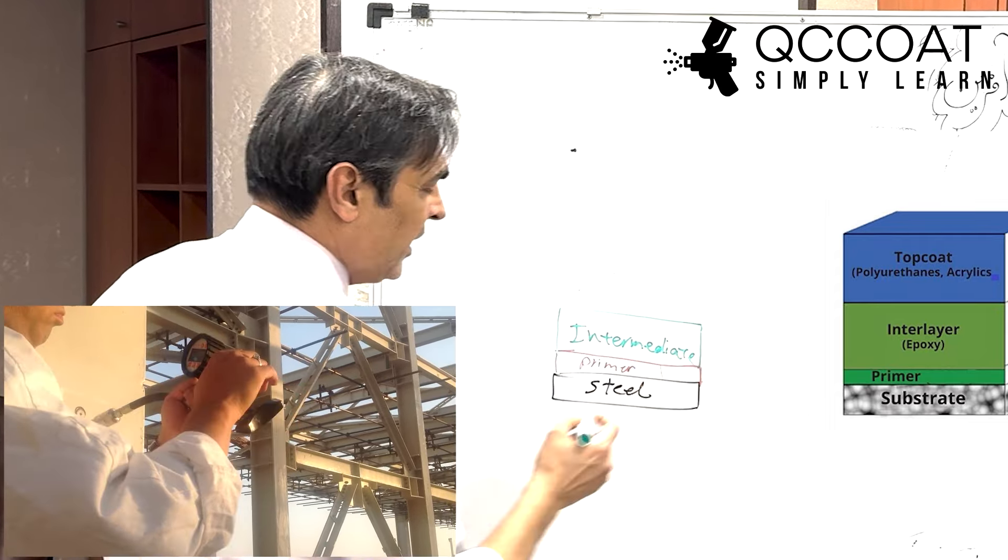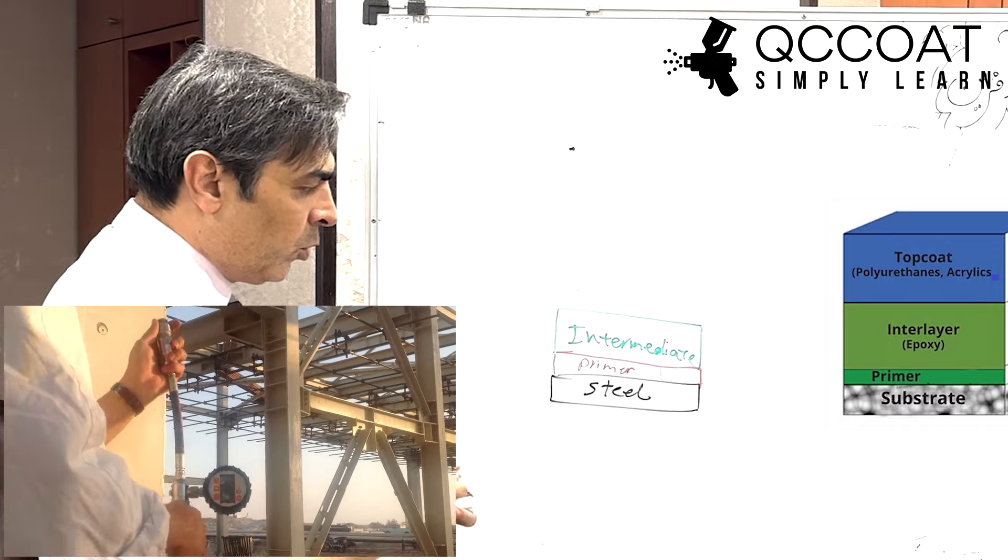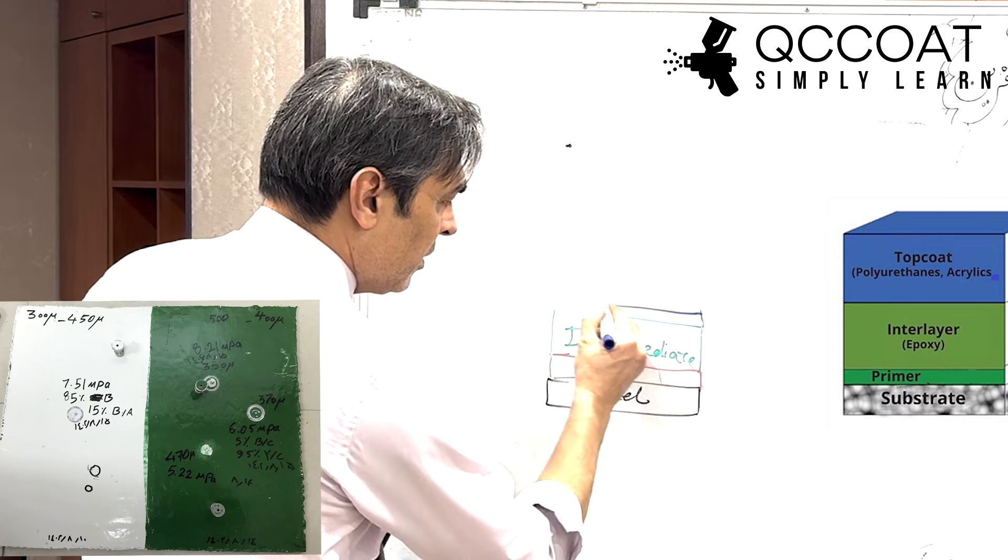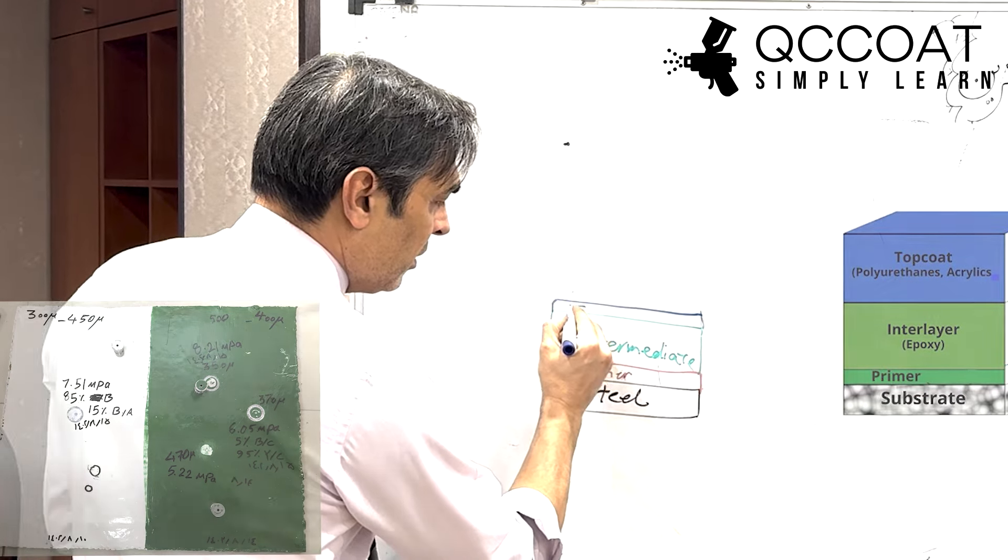If the amount of adhesion is not suitable, what is the reason? Which layer has less adhesion to other layers? Or which layer has little continuity?